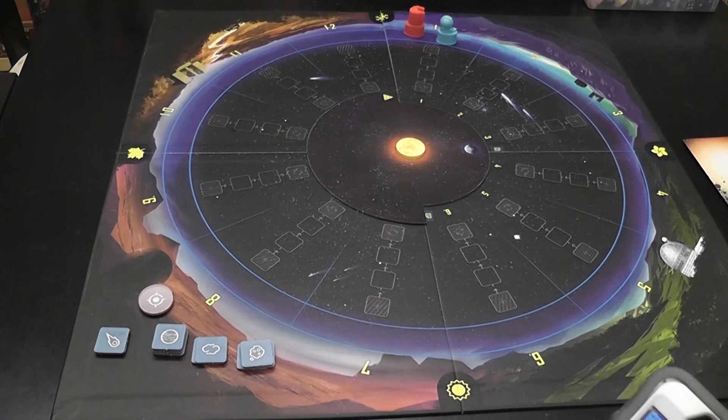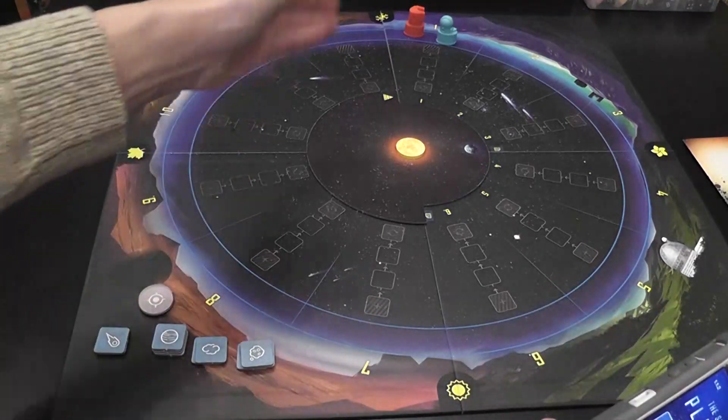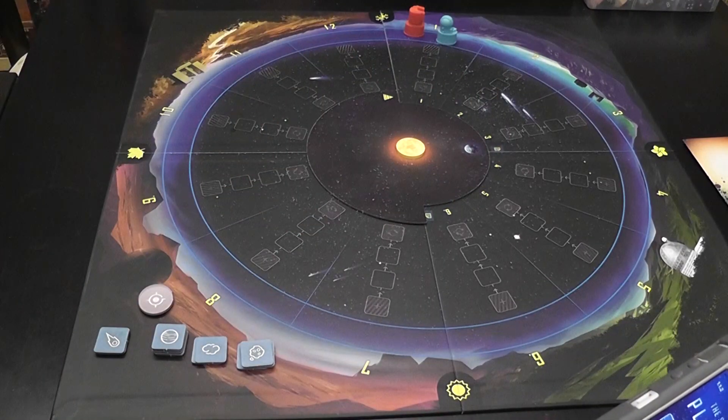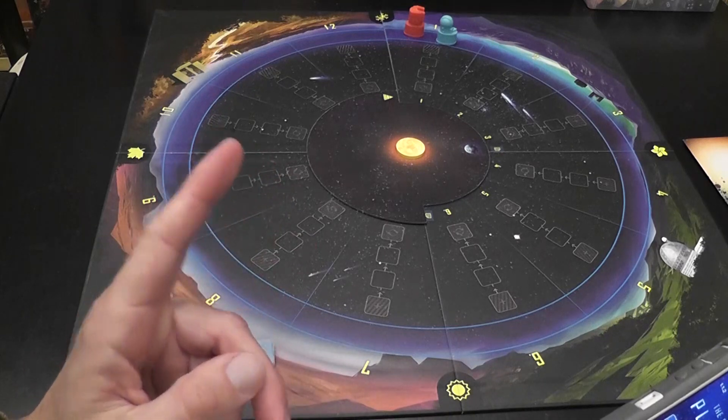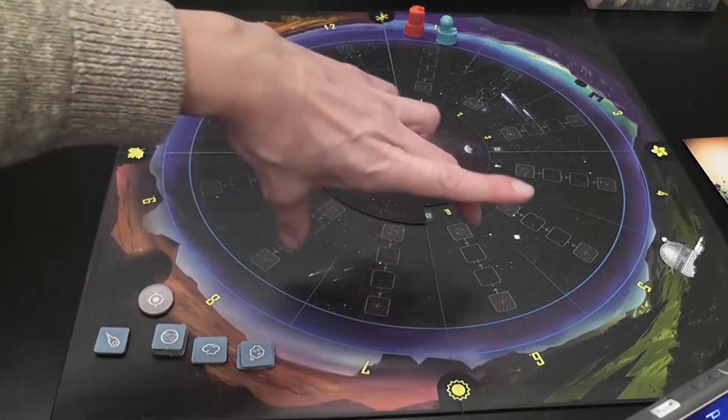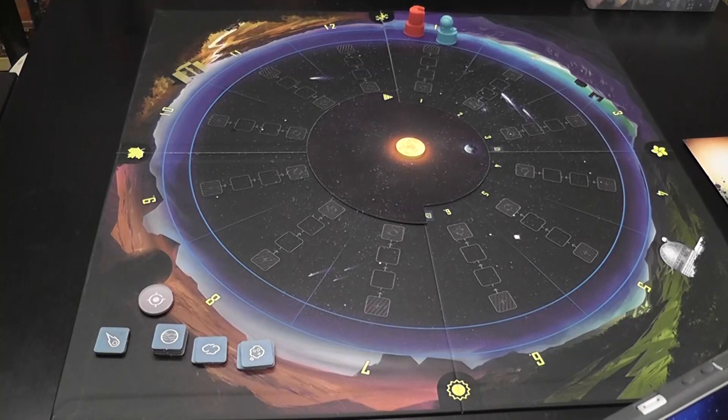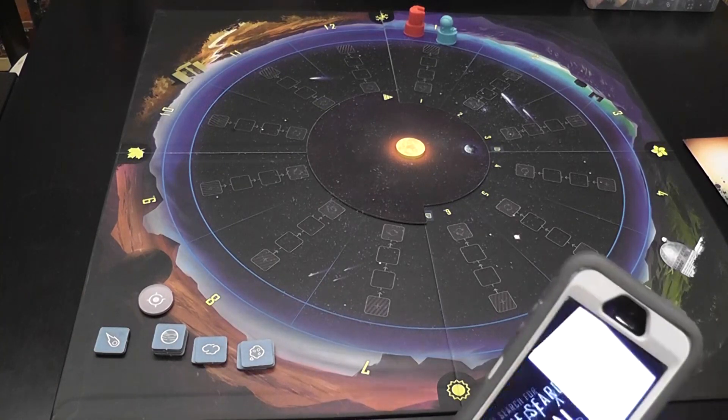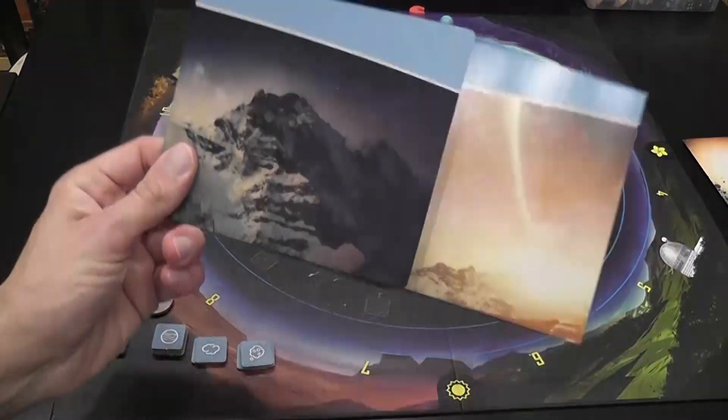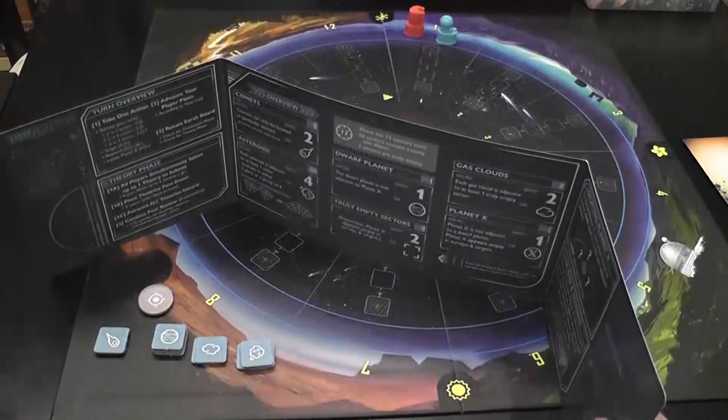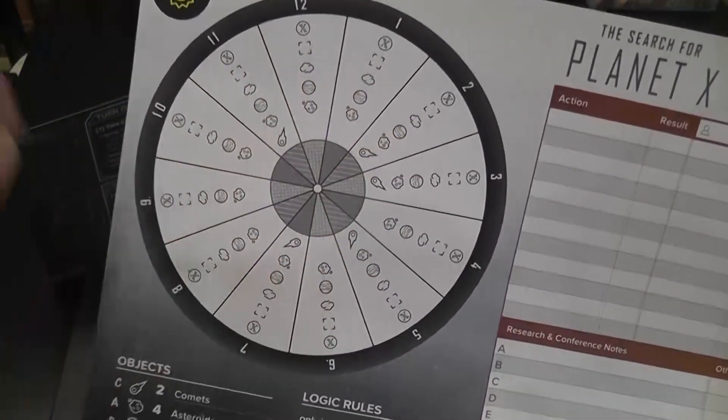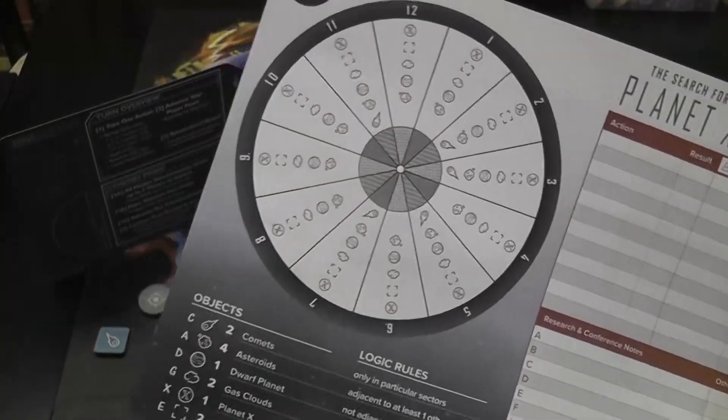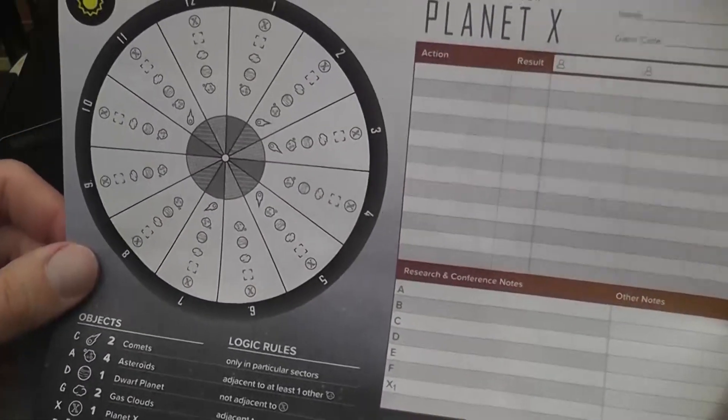It's important to distinguish the truly empty from the not-so-empty, because one sector has Planet X, but the sector appears empty. So there are three sectors that appear empty. Two actually are, and one contains Planet X. In this game, you will score points for figuring out the objects that are in the different sectors. You score a lot of points and you trigger the end of the game if you find where Planet X is and what are the objects in the two sectors next to it.